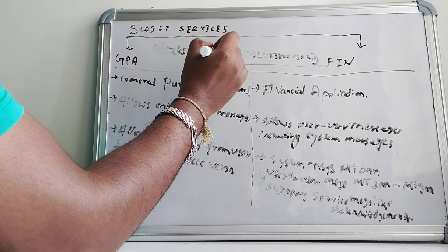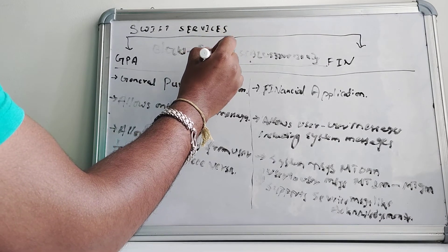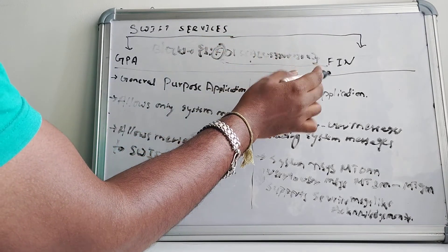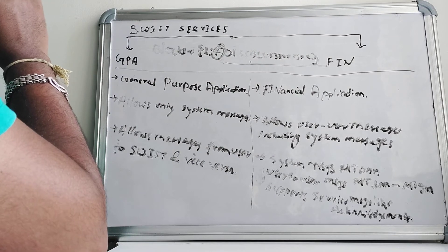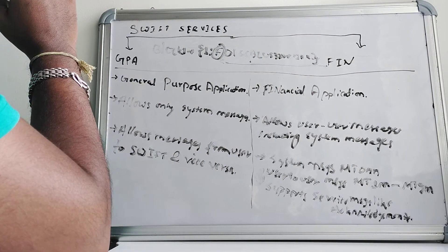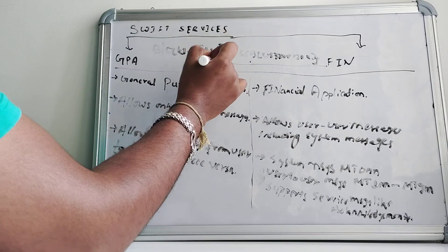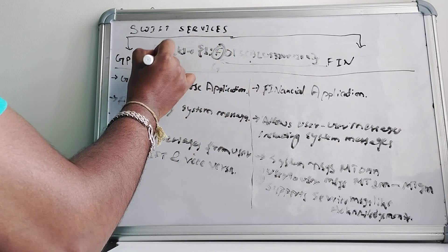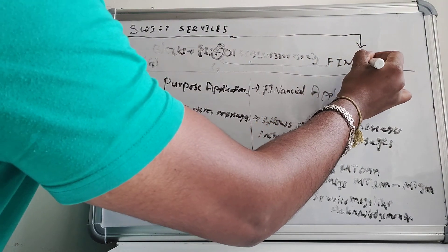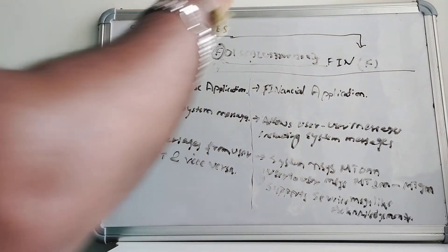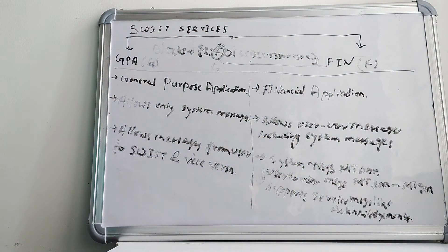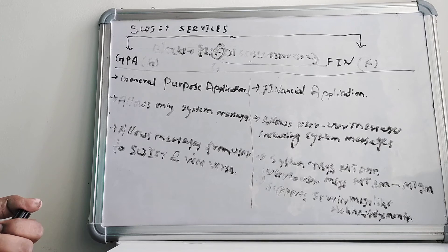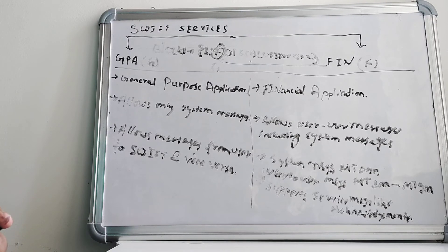After block ID 1, F stands for financial institution. If it's for system messages, that is GPA, it should be G. So if it's GPA you use G, for Fin you use F. This is all about Swift services - General Purpose Application and Financial Application. Thank you for watching.